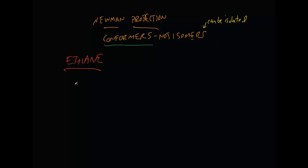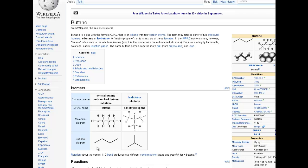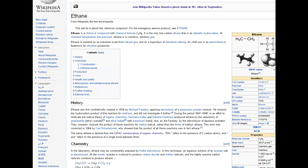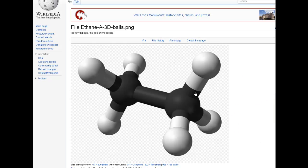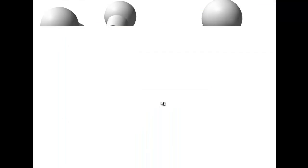Ethane looks like two carbons surrounded by six hydrogens, but this shorthand way of describing it is not two-dimensional and not flat. If you take a quick look at it three-dimensionally, it actually has a real three-dimensional structure.